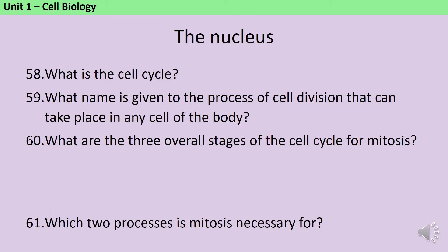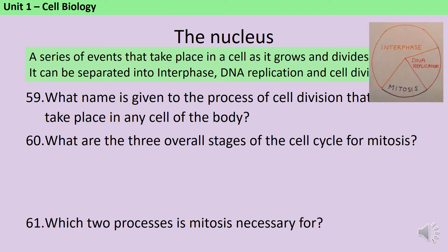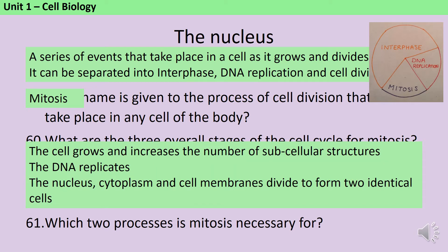The cell cycle is the series of events that take place in a cell as it grows and then divides. It can be separated into interphase, where the cell is growing and doing its normal activities, DNA replication, and then cell division. The process of cell division that can take place in any cell in the body is mitosis. The three overall stages for mitosis are: firstly the cell grows and increases the number of subcellular structures, then the DNA replicates, and then the nucleus, cytoplasm and cell membranes all divide to form two identical cells. Mitosis is necessary for growth and also for the development of multicellular organisms.